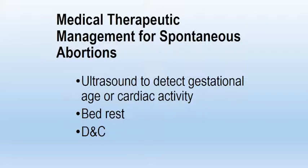For spontaneous abortions, one of the things we do is an ultrasound. We are going to find two things: does the gestational age of the products of conception within the womb equal that of the menstrual dates, and if the baby is far enough along — after six and a half weeks — is fetal heart activity present? We'll put the woman on bed rest, and if it looks like she is going to lose this baby, then we would prepare her for a D&C.